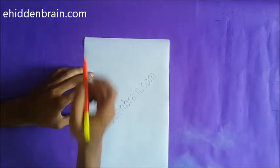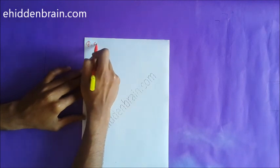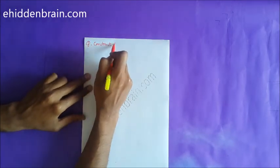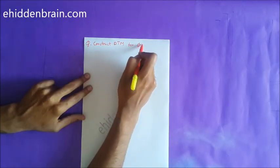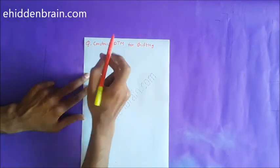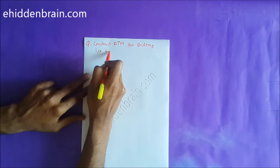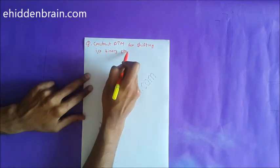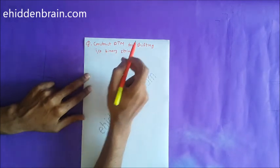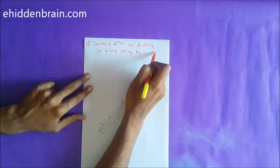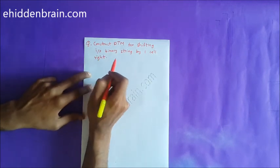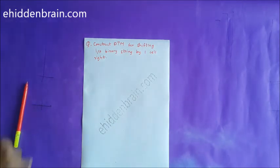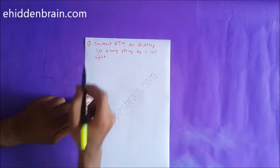Hello friends, welcome to EdenBrain.com. Today we will see a question on deterministic Turing machine: construct a deterministic Turing machine for shifting the input binary string by one cell to the right. This is the given question — let's see how to tackle it.